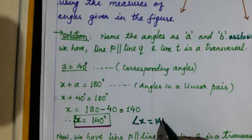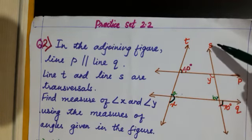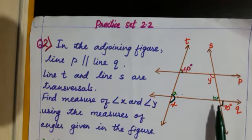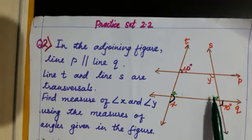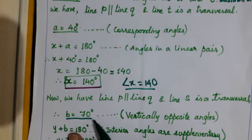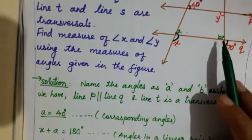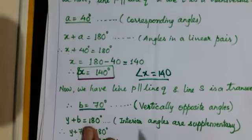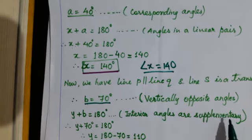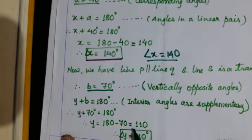Angle x is 140°. Now to find angle y, we use s as the transversal. Angle b equals 70° because they are vertically opposite angles. With line p parallel to line q and line s as the transversal, y plus b are interior angles, so y plus b equals 180°. Substituting b equals 70: y equals 180 minus 70, so angle y equals 110°.